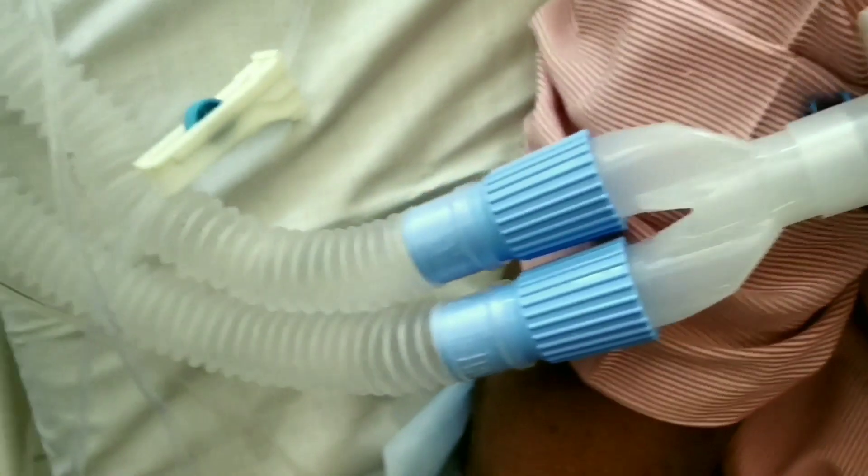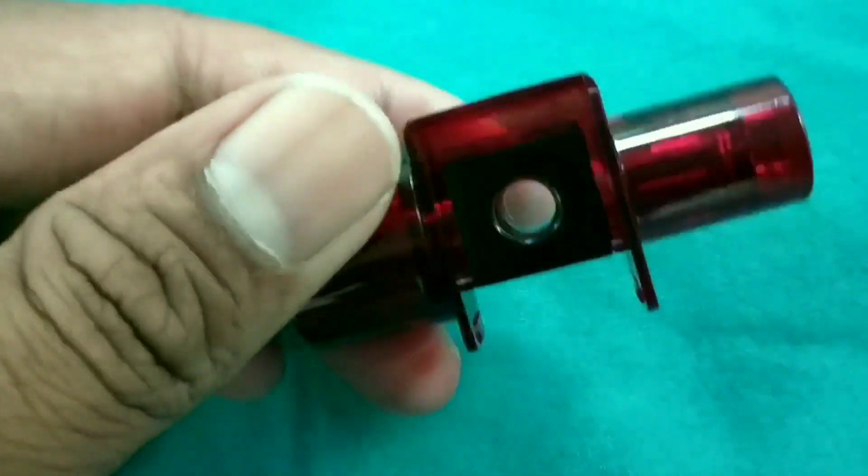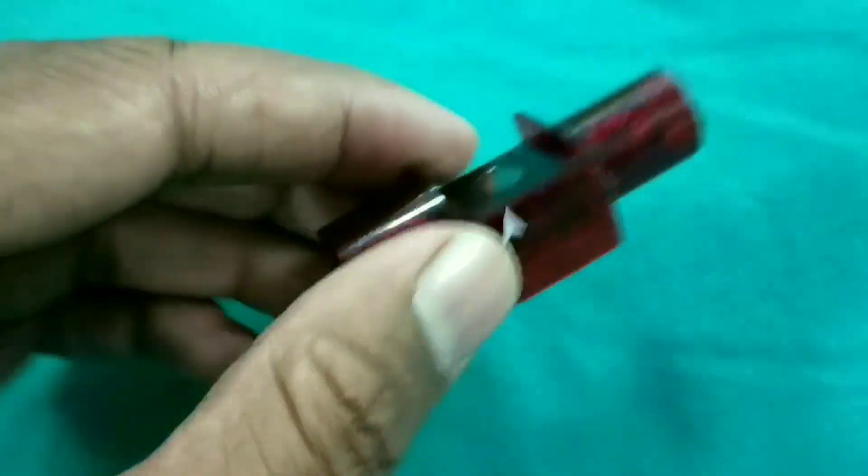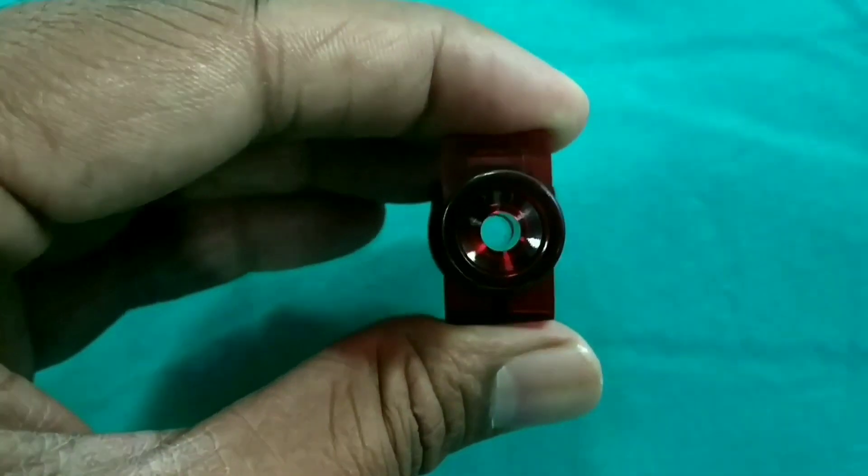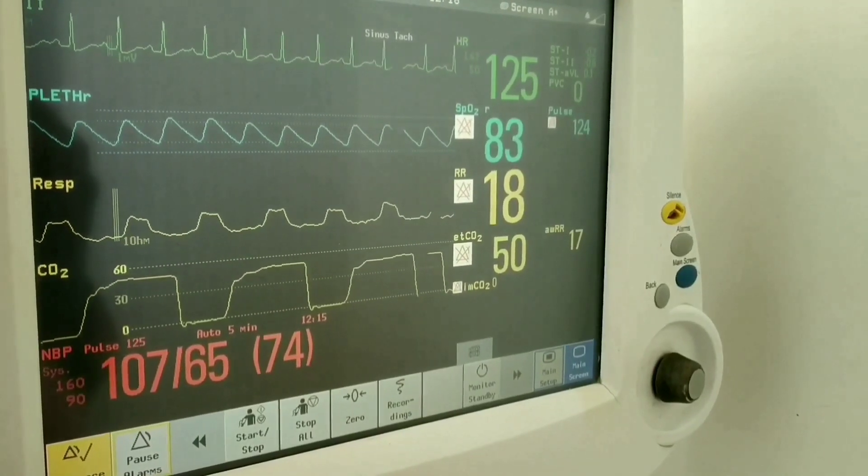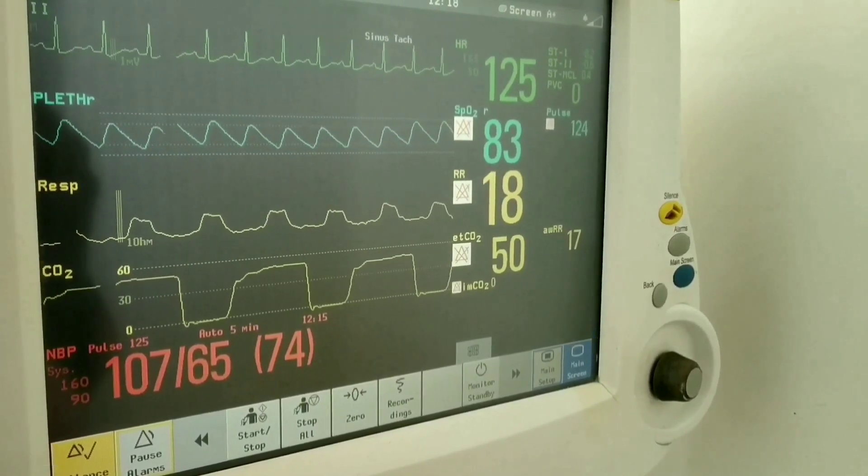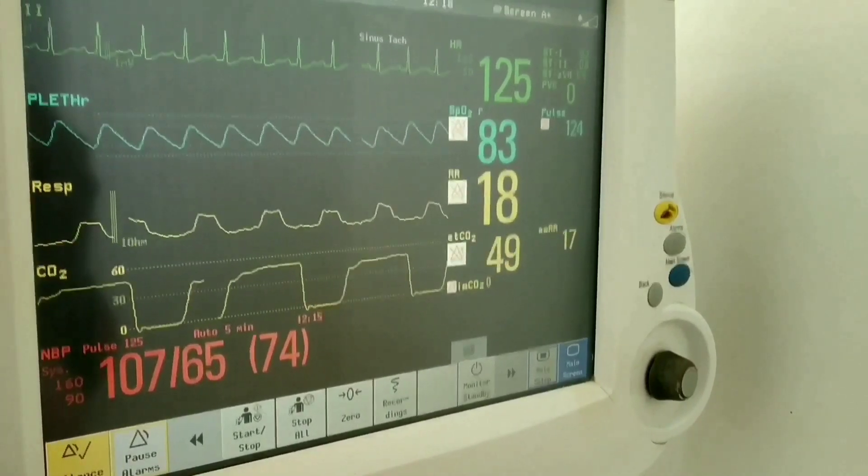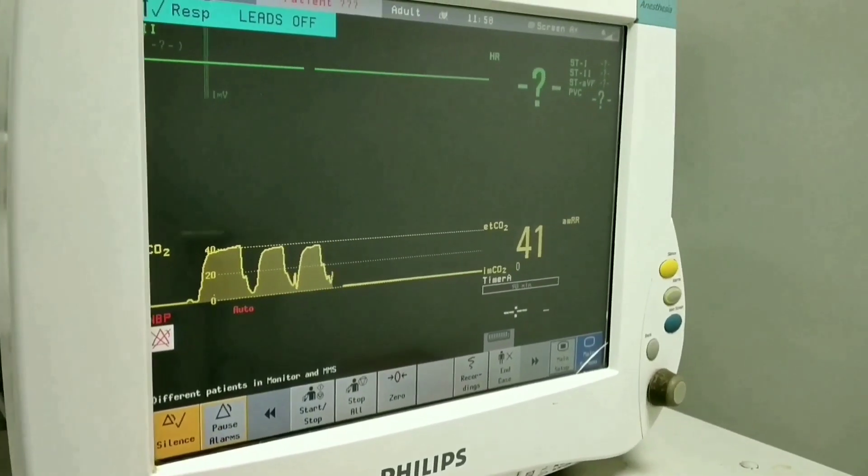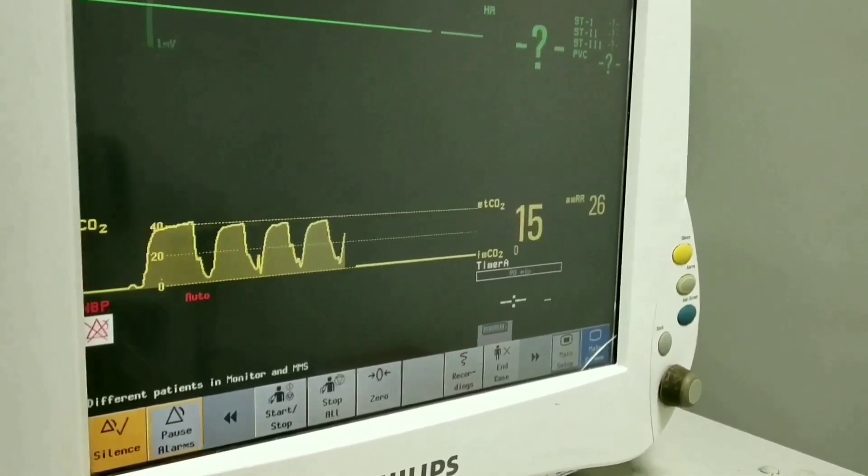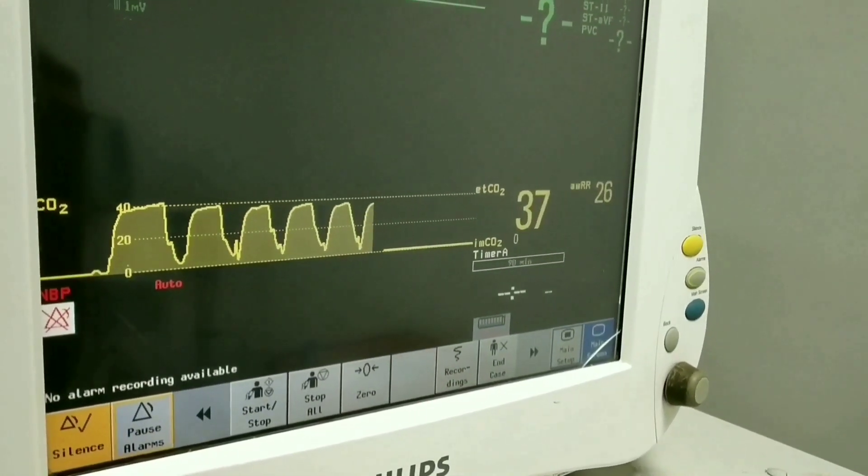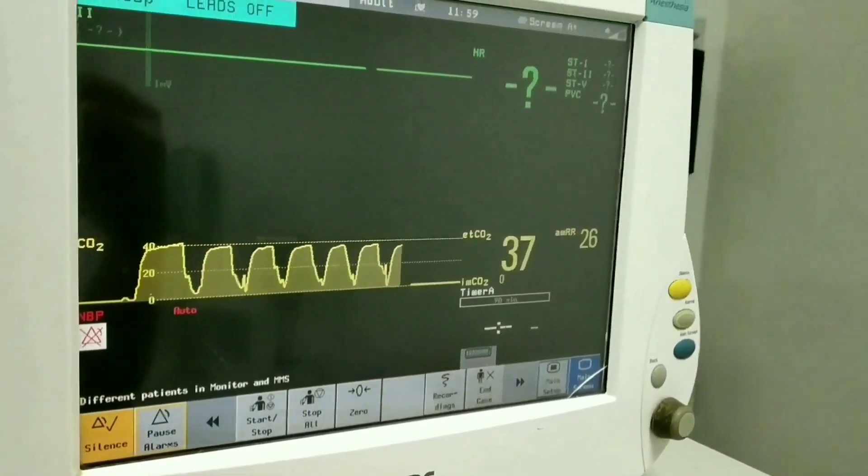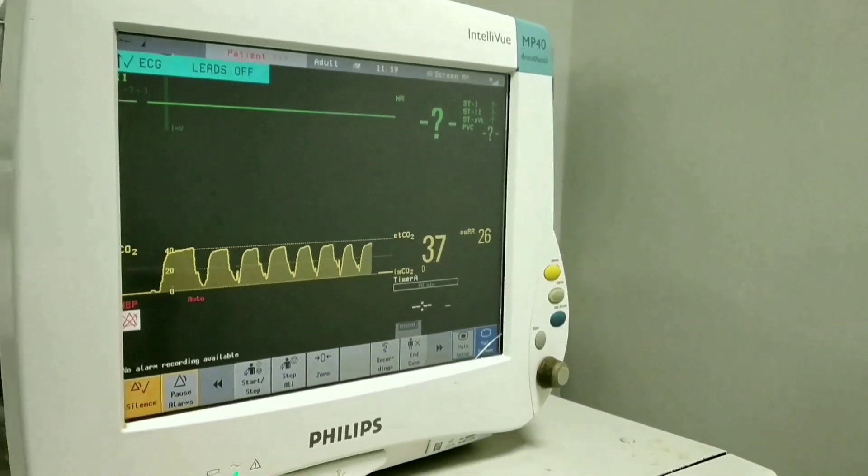This is the ET CO2 setup. This is an airway adapter from where the IR travels to the detector, and in between that air passes through. This is the patient monitor where you can see the CO2 reading of 50. This is while testing the capnostat; the readings that we can see on the monitor are 37.